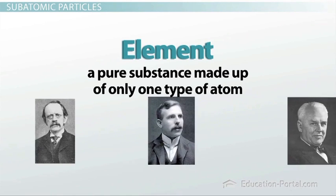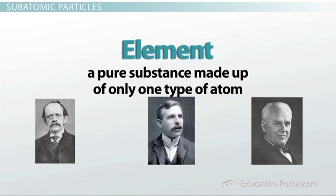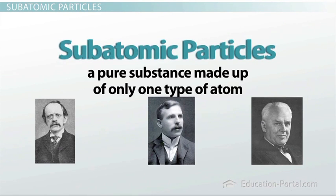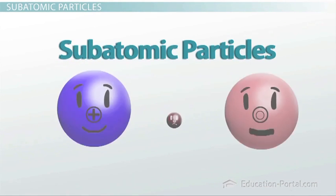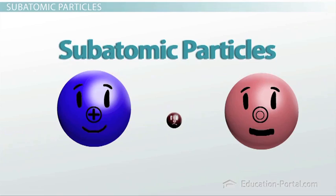Thomson, Rutherford, and Millikan, all scientists, discovered that atoms were made up of even smaller particles called subatomic particles. This lesson is going to focus on the three main subatomic particles: the proton, neutron, and electron.